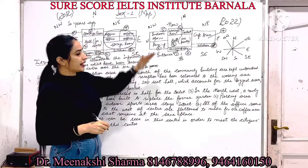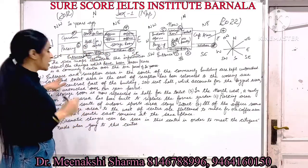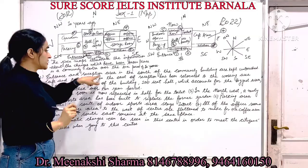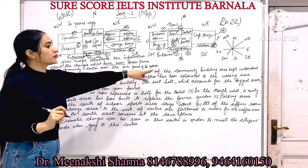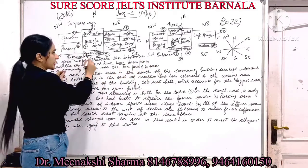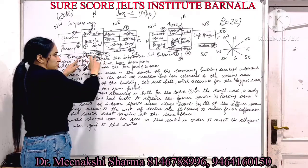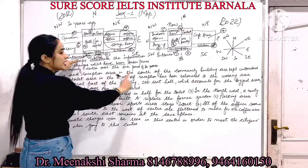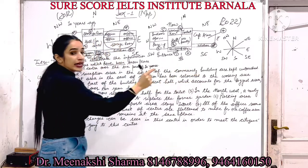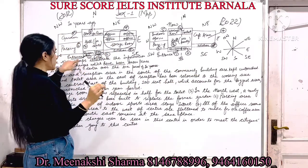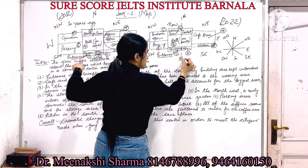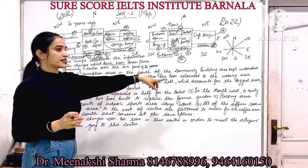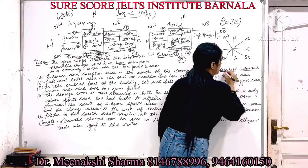I'm going to start with body paragraph one — first, entrance and reception. The entrance and reception area is in the south of the community building. Check that south direction — both entrance and reception are in the south direction. So I have written: 'The entrance and reception area in the south of the community building are kept untouched' — meaning no change can be seen.